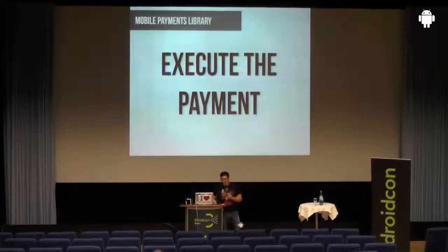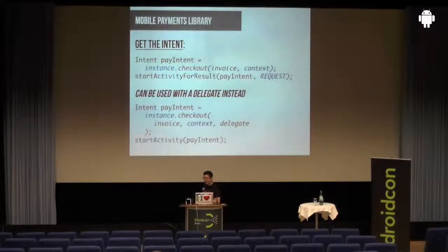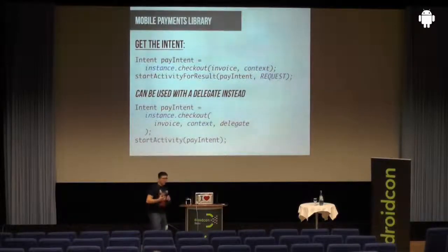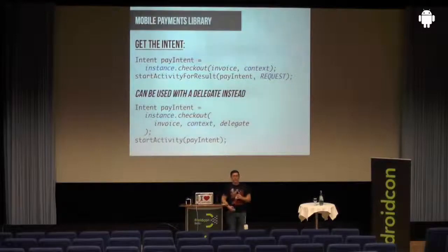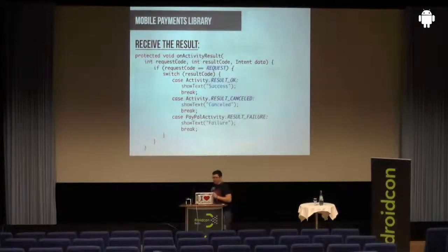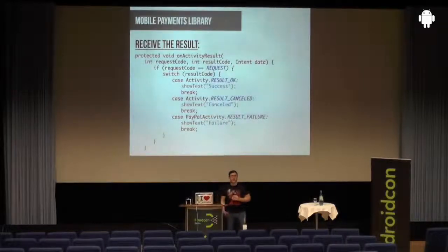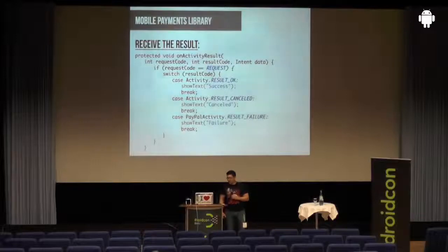When it comes to executing payments, we went with the Android way — you just fire an intent. You take your payment, be it parallel, chain, or simple, create an intent from it, and start it. You can go with startActivity and provide a delegate to get the result, or use the startActivityForResult mechanism for a very clean way to handle results. In onActivityResult you get your request code, check if it matches, and then check the result code: Activity.RESULT_OK means payment went through, cancelled means the user dropped off, and Result Failure means PayPal had an error.